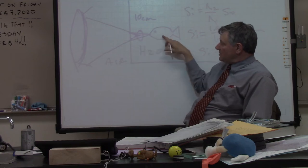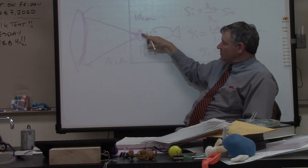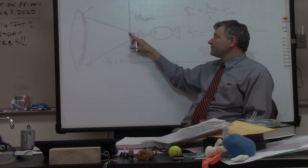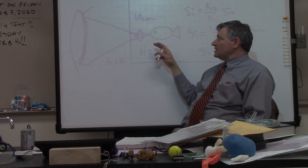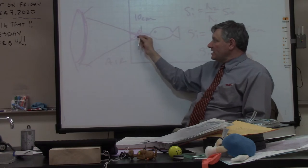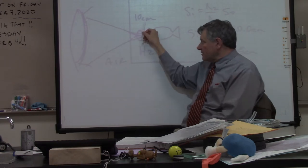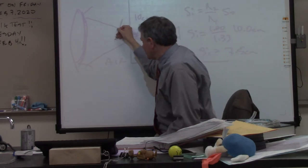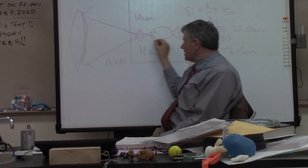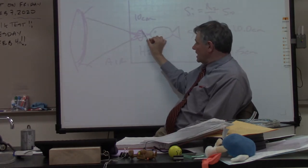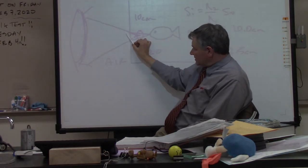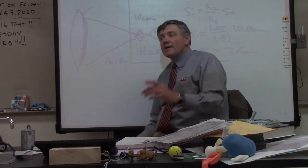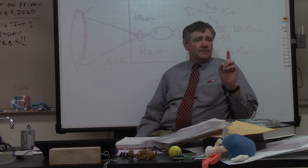For you to see that, that light was traveling like this, right? Then when it hit the air, this side sped up and it got bent this way. This side, when it got bent, got bent down this way. So water acts like a divergent lens?